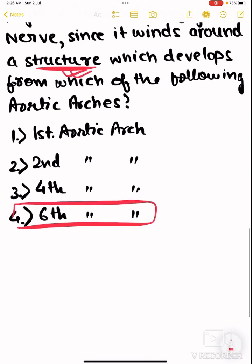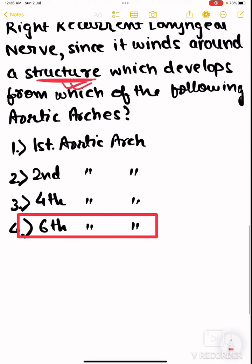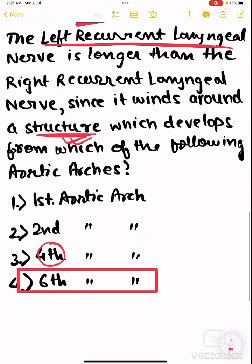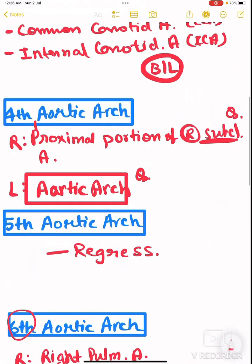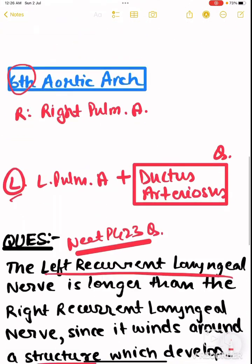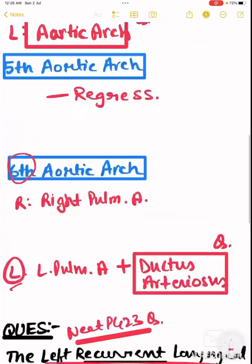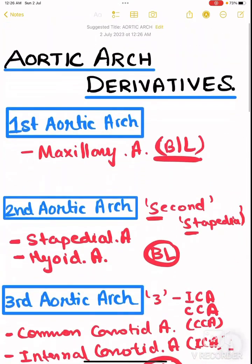Since the ductus arteriosus is a derivative of the sixth aortic arch on the left side, the answer is the sixth aortic arch. Many students incorrectly mark the fourth arch — remember, the left recurrent laryngeal nerve winds around the ductus arteriosus, not the aortic arch itself. That's it — thank you!